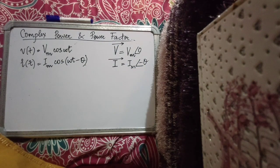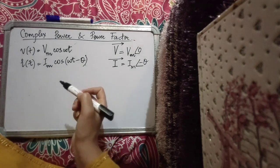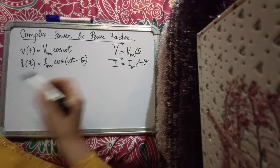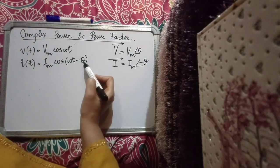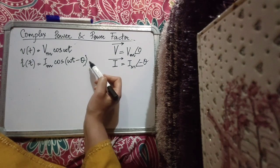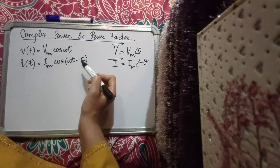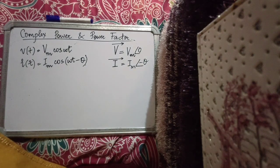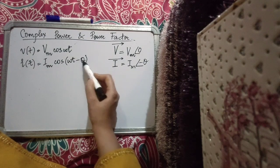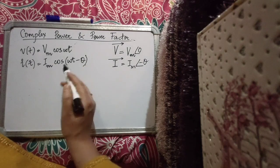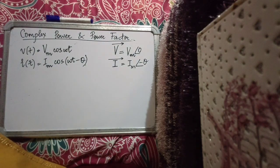Previously we found voltage-current relationships and instantaneous power independently for R, L, and C. This is a more generalized approach using angle θ. If the load is a pure resistance, θ = 0; if inductance, θ = 90°; if capacitance, θ = −90°. So this generalized analysis covers any combination of R, L, and C.